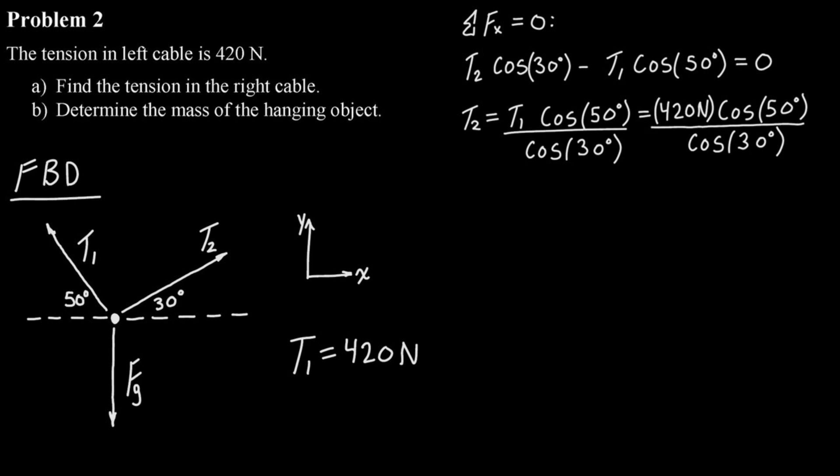So we'll have all that equal to zero. Now we can rearrange our equation for T2, and then plug in the value for T1 that they gave us in the question. And if we do that, we get 311.7 newtons for T2, and that's going to be the answer for part A.